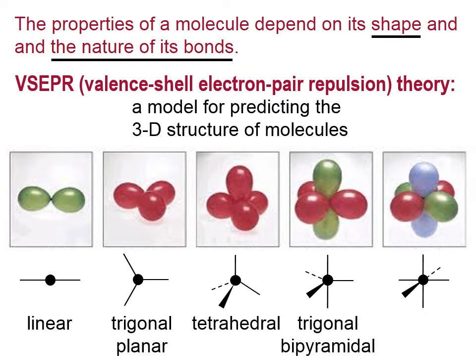This next one is trigonal bipyramidal, and the last one is octahedral. And you might think there are six balloons there. Why would we call it octahedral rather than perhaps hexahedral? Well, if you connect each of these balloons with a triangular face and count the faces, there would be eight faces. So that's how the name came into being.